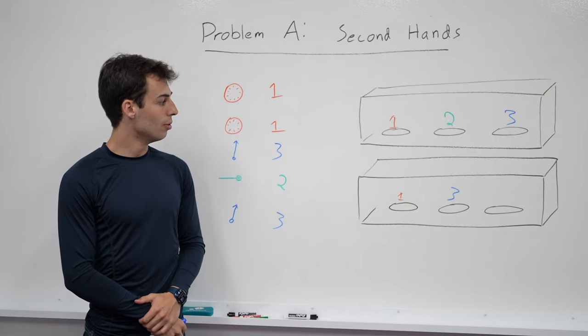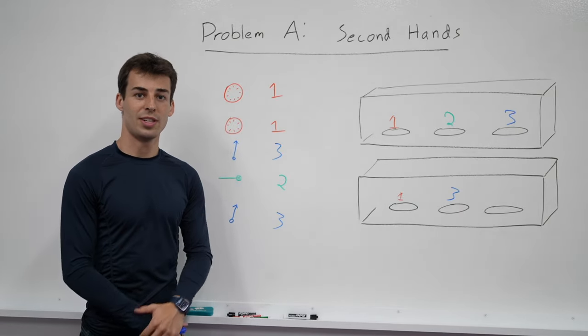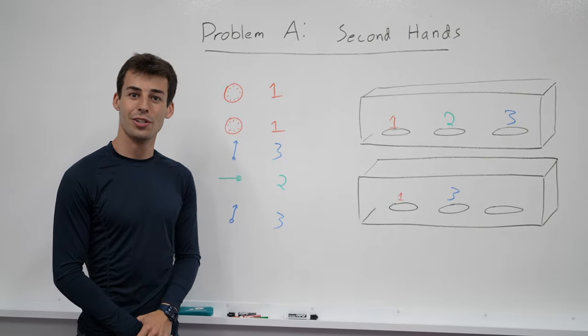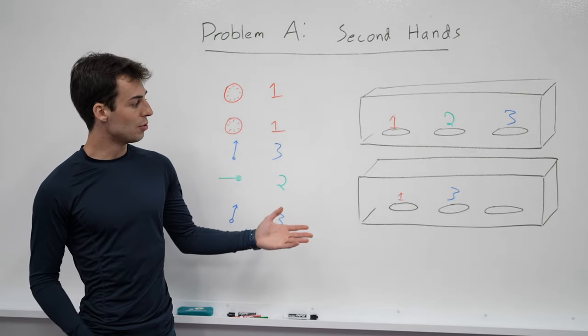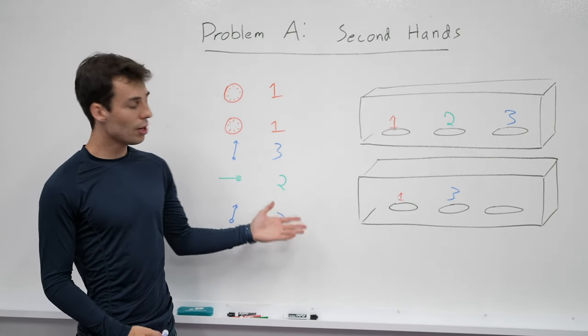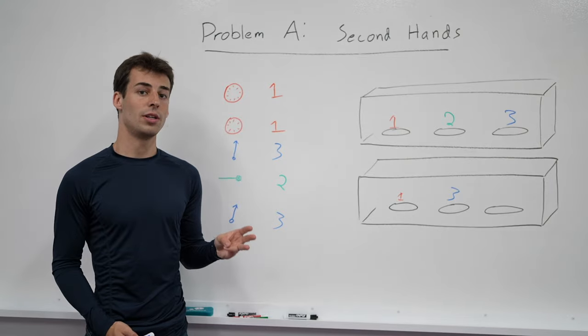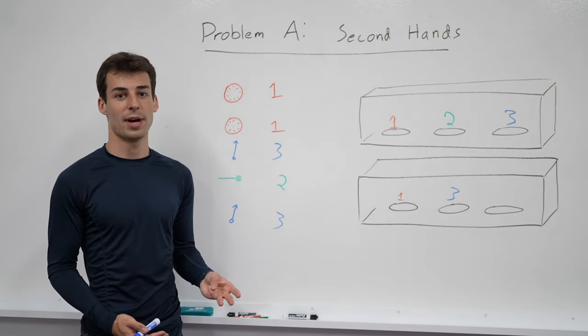So when is it possible and when is it not? That's exactly what you need to know to solve the problem. The first observation is: if you ever have three of one clock piece, it's going to be impossible.